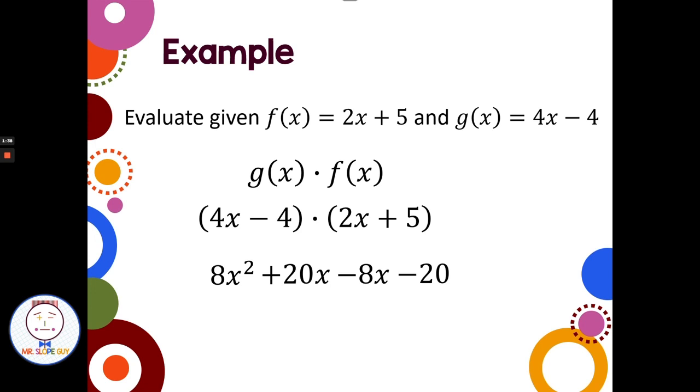Then, sometimes we'll have like terms we can combine, sometimes we won't. In this case, we have a fairly common pattern of like terms in the middle. We have a positive 20x and a negative 8x, and when I combine a positive 20x and a negative 8x, I get positive 12x. So my answer would be 8x squared plus 12x minus 20.